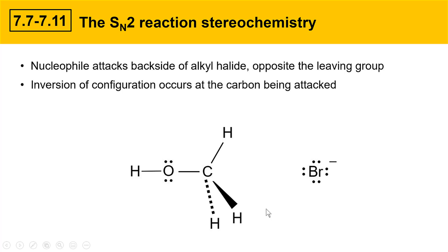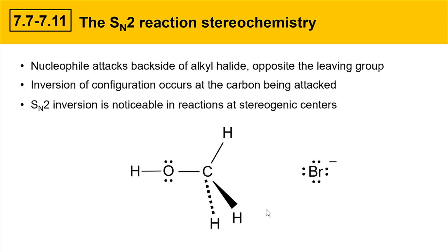That's a discussion of how the stereochemistry works in an SN2 substitution reaction. The thing about it is, though, when the reaction happens at a carbon that's not a stereogenic center, you don't really notice the inversion of configuration. Where it's really obvious is when the SN2 substitution reaction occurs at a stereogenic center — SN2 inversion is noticeable in reactions that occur at stereogenic centers. This carbon is not a stereogenic center; it doesn't have four unique groups attached, so it's not obvious that inversion took place.